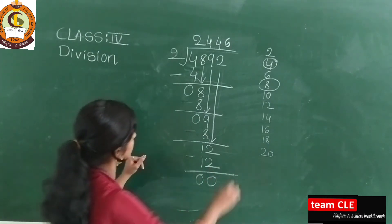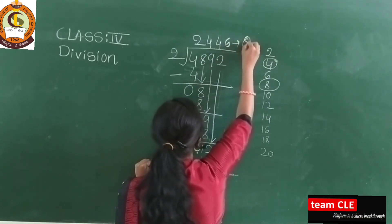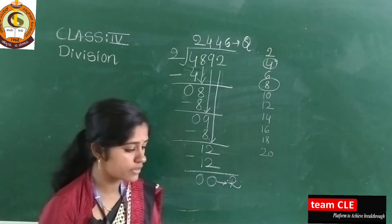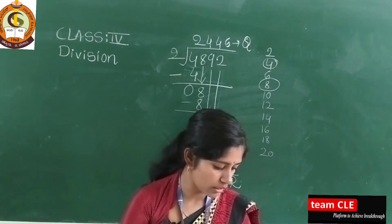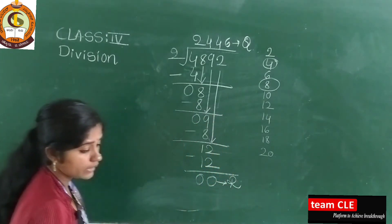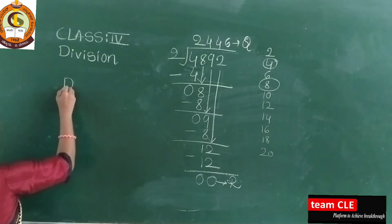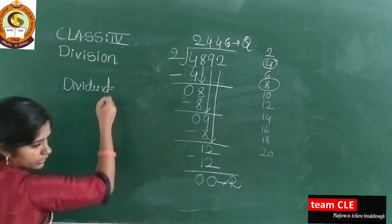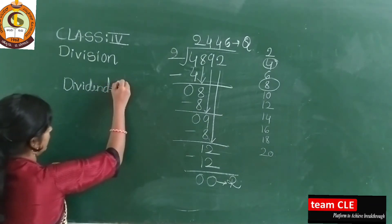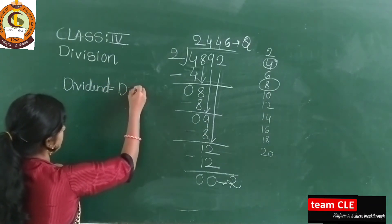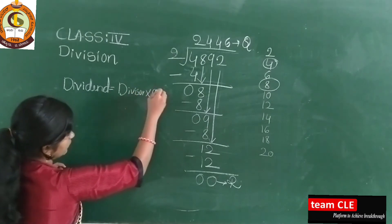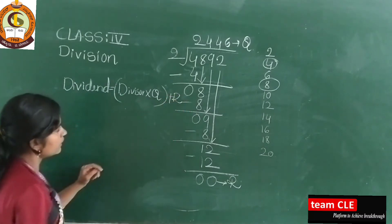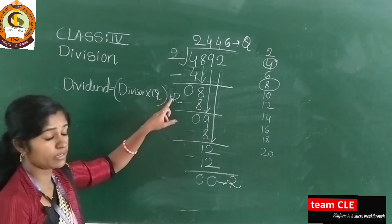The quotient is 2446 and the remainder is 0. For verification, you have a formula: Dividend = Divisor × Quotient + Remainder.